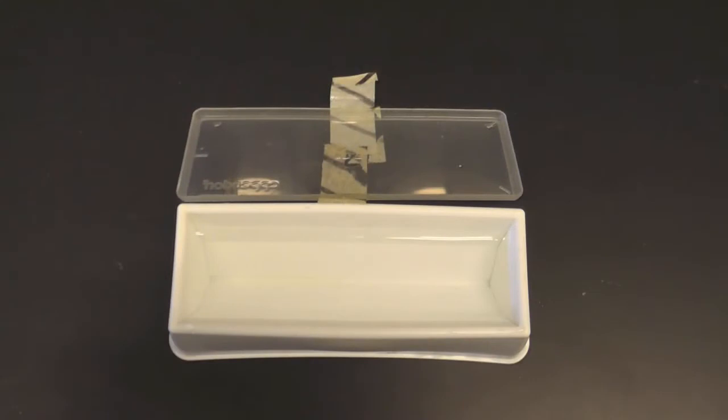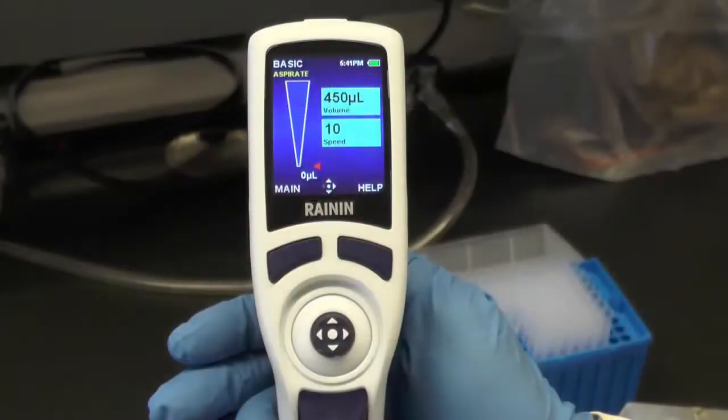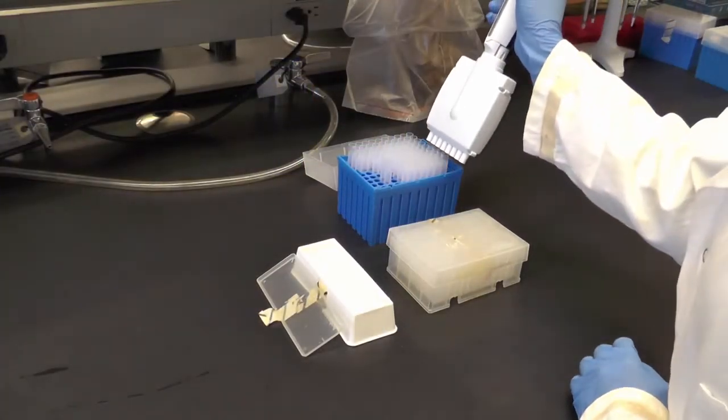First, you need to fill the wells in the megablock with your diluent. Pour enough diluent into a reservoir. Set a multi-channel pipette capable of holding your desired diluent volume to the proper amount and attach pipette tips to the pipette.